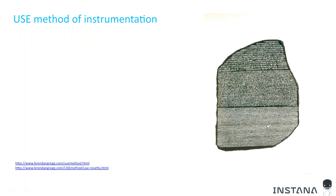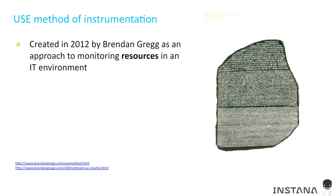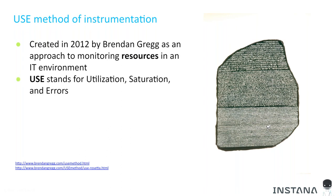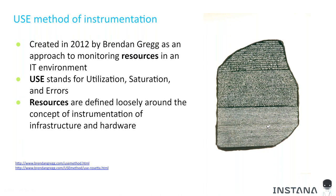What is the USE method of instrumentation? USE is an acronym realized by Brendan Gregg in 2012, which was a method to troubleshoot and find performance bottlenecks for applications running on what were then considered modern web-scale infrastructure. Many aspects of performance analysis still rely on these methods, including Instana, but it's important to understand that the USE method was created at a time where microservices and distributed applications really hadn't taken hold yet.